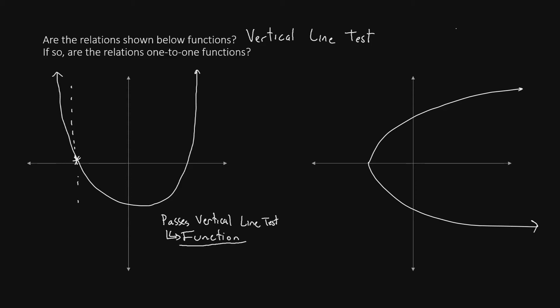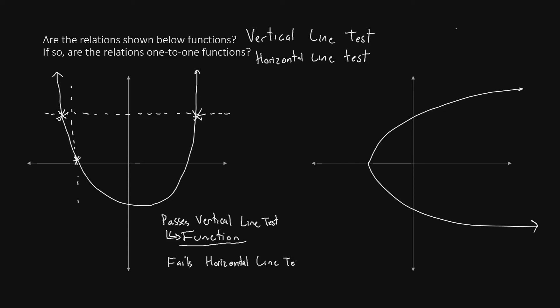Now to answer the second question: is this relation a one-to-one function? To check if the relation is also one-to-one, we must do the horizontal line test. For the horizontal line test, we see if there is any horizontal line that can cross through the graph twice. If we draw a horizontal line here, we can see that it crosses through the graph twice — once on the left and once on the right. Because it crosses twice, this relation fails the horizontal line test. Therefore, although it is a function, it is not one-to-one.